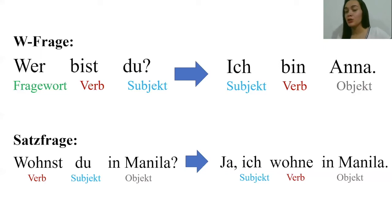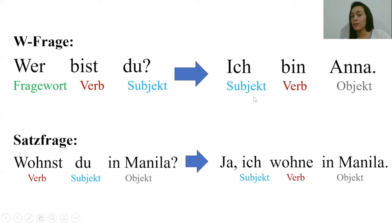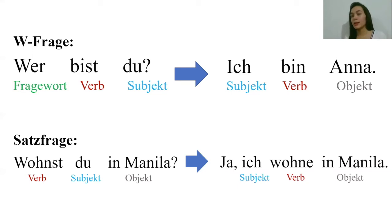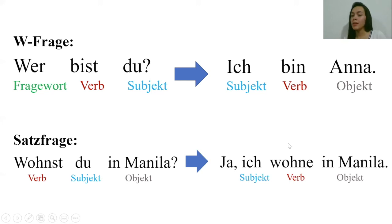Now, when we look at the answers to these questions, we will see similarities. The answer to a W-Frage like 'Wer bist du?' follows the structure: subject, verb, object — 'Ich bin Anna' (I am Anna). When we look at the answer to a Satzfrage, it is: ja — ich wohne in Manila. Yes — I live in Manila. Subject 'ich', verb 'wohne', object 'in Manila'. Same structure.